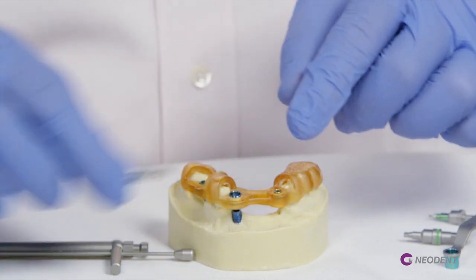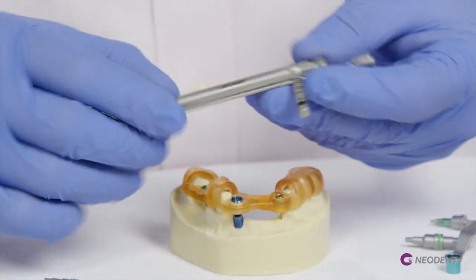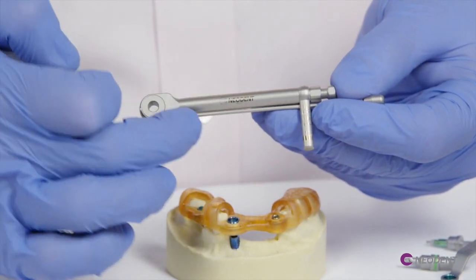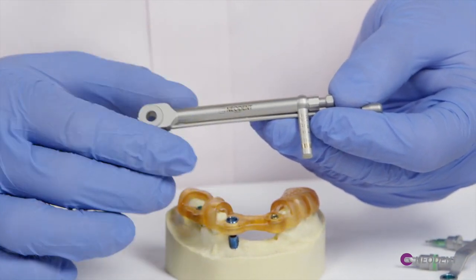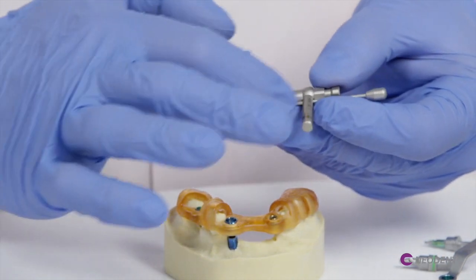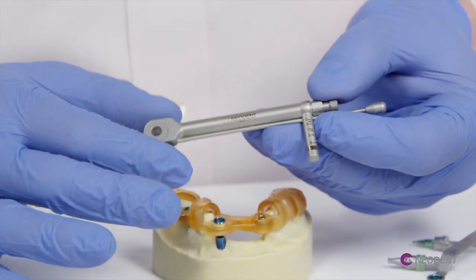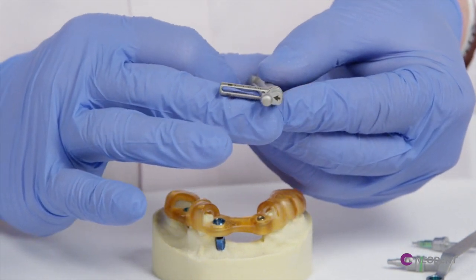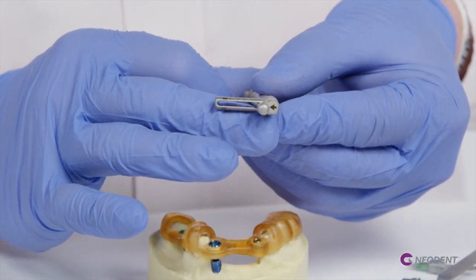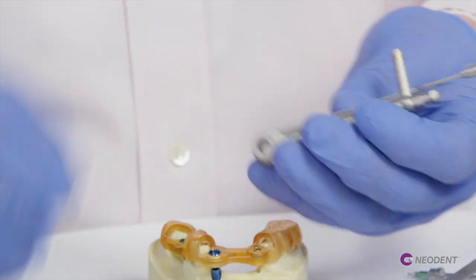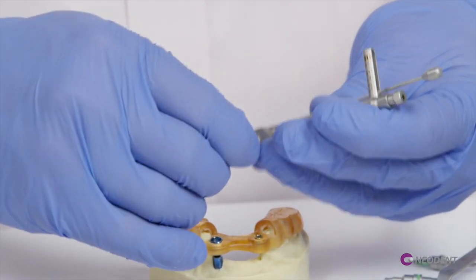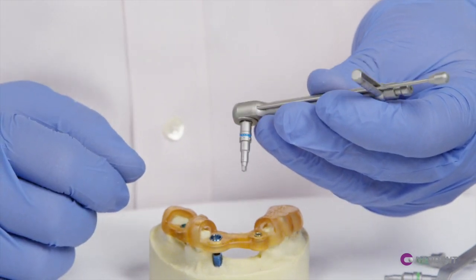Just prior to doing that, I want to make sure our Neodent torque wrench is set up properly. I want to be able to read Neodent on top of our wrench. I want that bar facing towards me and want to make sure that the arrow on the end of the wrench is towards tighten. On the underside, I have the square portion of the wrench where I can insert the driver for the implant.